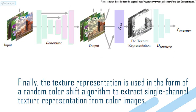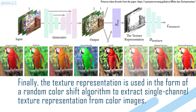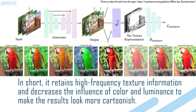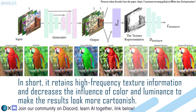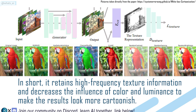Finally, the texture representation is used in the form of a random color shift to extract single-channel texture representation from color images. In short, it returns high-frequency texture information and decreases the influence of color and luminance to make the results look more cartoonish.